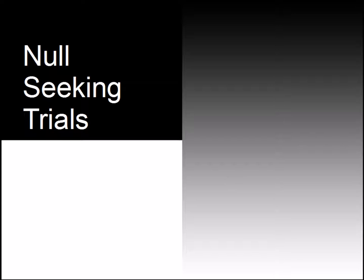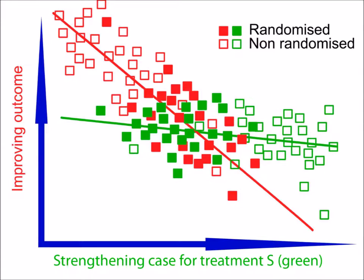Features can be added to this basic description to improve the utility of null-seeking trials. A key one is that all patients treated should be included rather than only those who are randomised. Our research into patient opinion indicates that typically around 10% of patients would choose randomisation. A coding system is used to differentiate between patients who are selected to have a treatment and those who are randomised to it. Randomised cases are shown as solid squares and non-randomised as hollow squares. Surgical cases are shown in green and medical in red.